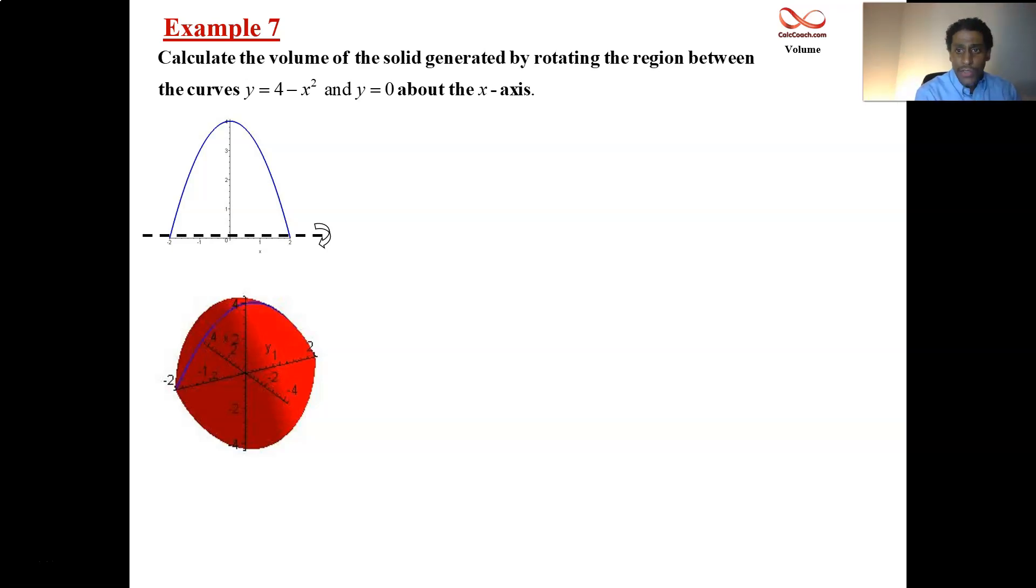And so in disk method what you do is you have to find the radius. And this one is straightforward. The radius is the distance from the x-axis up to the function. It's just the function. R of x is equal to 4 minus x squared. That's it.